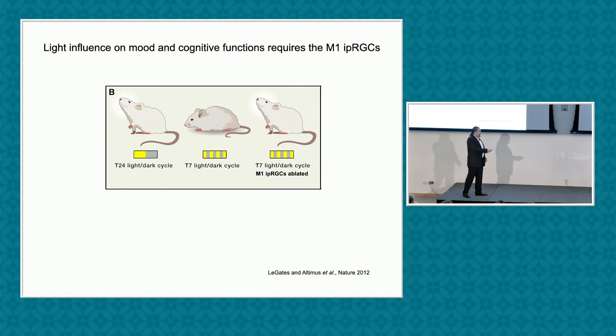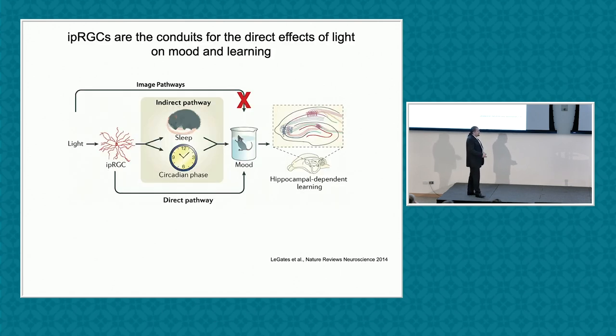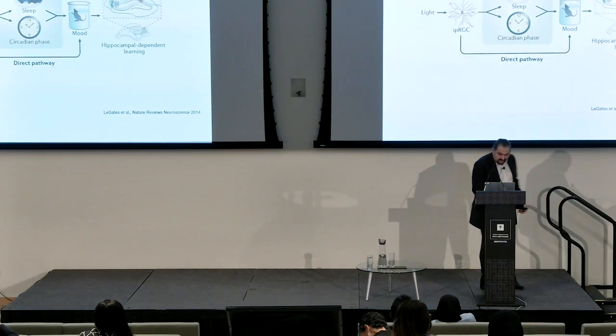I won't show you the data, but I promise you that if you kill the M1 IPRGCs, the T7 effects are then completely abrogated. Now we showed beyond reasonable doubt that light itself can affect the mood of the organism. Actually, it's not surprising. We have known for many years that people who live in the Northern Hemisphere, in Denmark, Sweden, in the winter months, they have what is known as seasonal affective disorder. We came up with a new model at the time in 2014, which was very controversial. Not anymore. We said that we're not debating whether sleep and circadian rhythm disruption can cause sleep and mood and learning and memory problems. But what we think is there is a direct pathway through the M1 IPRGCs that affect mood independent of sleep and circadian rhythm disruption. What is remarkable, at least in rodents, image forming pathways are not responsible. Whether this is the same in humans or not is something to be determined.